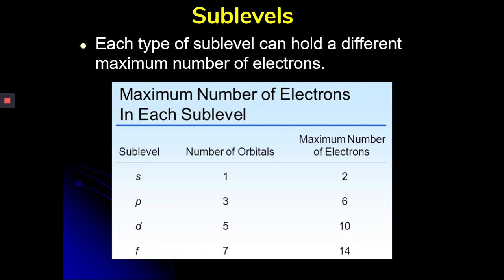Each type of sub-level can hold a different number of maximum electrons based on the number of orbitals. So S has one orbital, so it can hold two electrons. Remember we would show that S with one line. And then P has three orbitals, so we would draw three lines. Two for each would make a total of six that could go into the P. D has five, so we would draw D and then five lines, so that's a total of ten electrons. F has seven, so that would be a total of fourteen electrons.